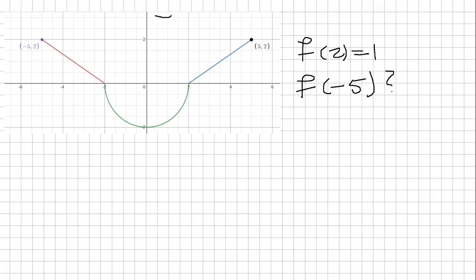So keep in mind this is f prime. In order to find f of negative 5, we have to use the integral. So the integral from negative 5 to 2 of f prime of x dx is equivalent to saying f of 2 minus f of negative 5, in accordance to the fundamental theorem of calculus.